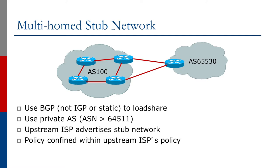In this case we use a private AS number. There's no need for a public AS number if the only two links are to the same upstream provider. If the end site has a public AS number, that can be used as well, but registries normally will not assign an AS number if the end site is simply connecting to one other provider. The upstream ISP will advertise the stub network as it advertises any other customers, and any policy is confined within the upstream ISP's policy.